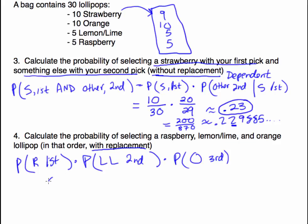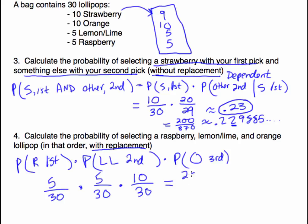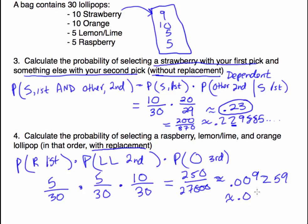Selecting a raspberry first: 5 out of 30. Times the probability of selecting lemon lime: 5 out of 30. The denominator doesn't change because we put the raspberry back — still 30 lollipops. Times orange: 10 out of 30. Multiplying numerators: 5 times 5 times 10 equals 250. Denominators: 30 times 30 times 30 equals 27,000. So 250 divided by 27,000 equals approximately 0.009259, which rounds to 0.009.